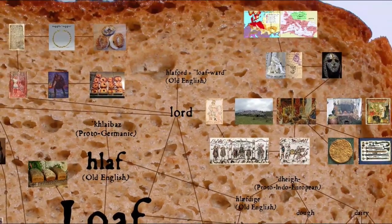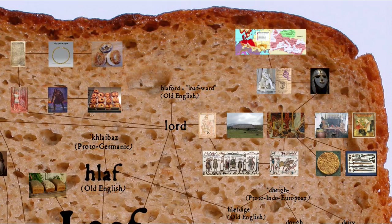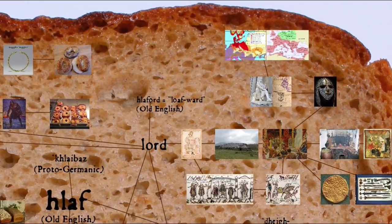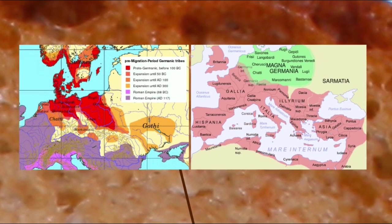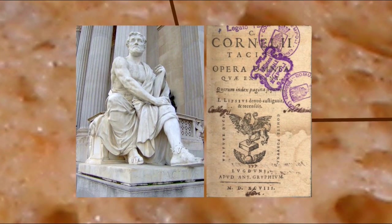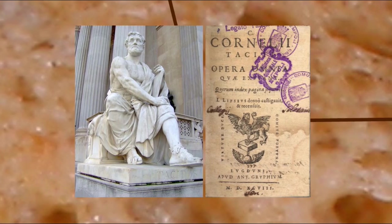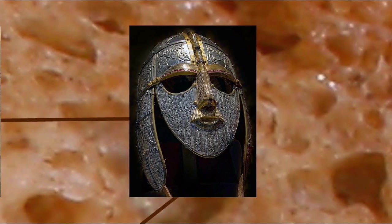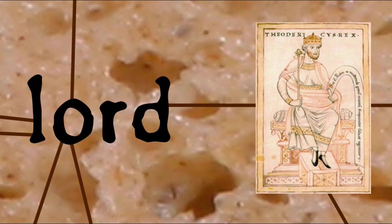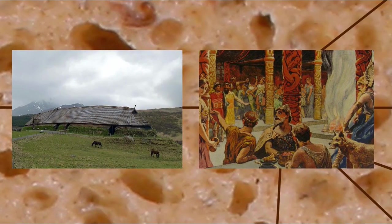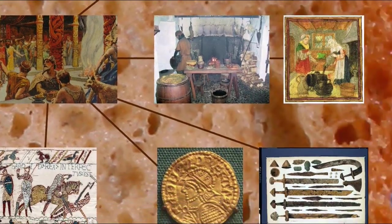These Germanic-derived words suggest the importance of bread to ancient and medieval Germanic culture in particular. As the Roman Empire came into more and more contact with the various Germanic tribes along their northern borders, the Roman writer Tacitus composed an ethnographic description of these foreign peoples and their strange customs. He used the Latin word comitatus to describe the way they organized their heroic warrior culture, a term still used by scholars today. The comitatus was the band of warriors who followed a particular lord or king. They would live in the lord's hall, and he would provide them with all the necessities: food,